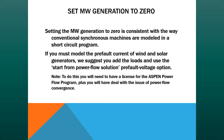Suppose you must model the pre-fault currents of wind and solar generators. The right way to do it is to add loads in your network and use the 'start from power flow solution' pre-fault voltage option. The problem with this approach is that you need a license for the Aspen power flow program, and you have to deal with power flow convergence issues — it costs money and causes trouble. I don't think many relay engineers in North America will like this idea, but in some of the 63 countries where we have users, this is the standard way to start a short-circuit program.